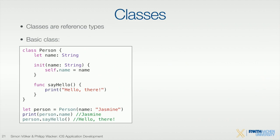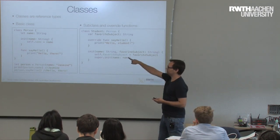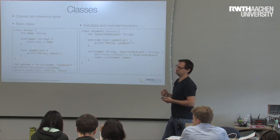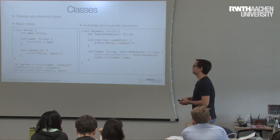Let's talk about classes. Classes are reference types — they work exactly the same way as structs, except that you get a pointer and not a copy when you use them. That's the only difference for now. You create an initializer for a class — it's a little more work than structs. In a struct, for every value you have, a basic initializer comes for free. In a class, you have to define the initializer yourself.